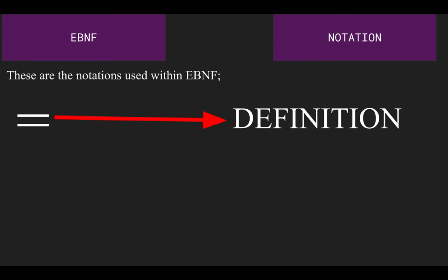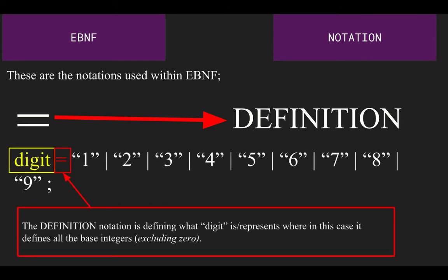Let's begin talking about the notations of eBNF. First, we got the equal signs, which means definition, where it uses it as a way to define what a product represents. In the case of digit, it represents the number between 1 and 9.